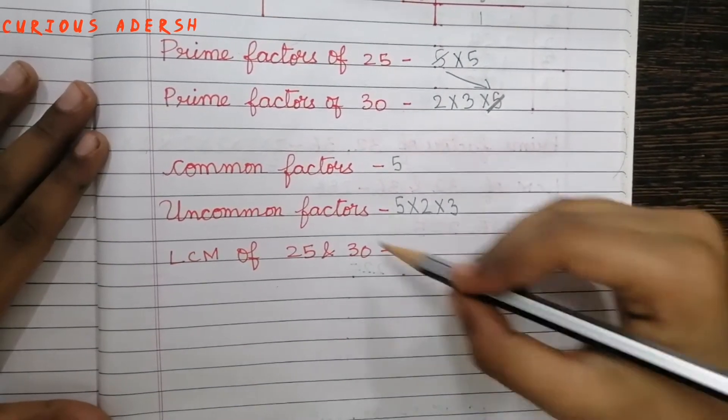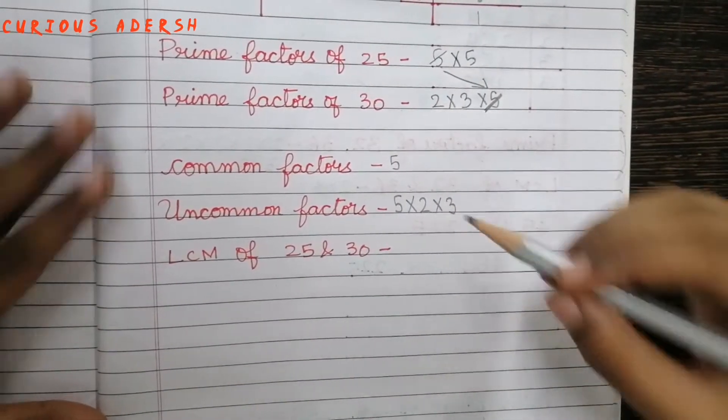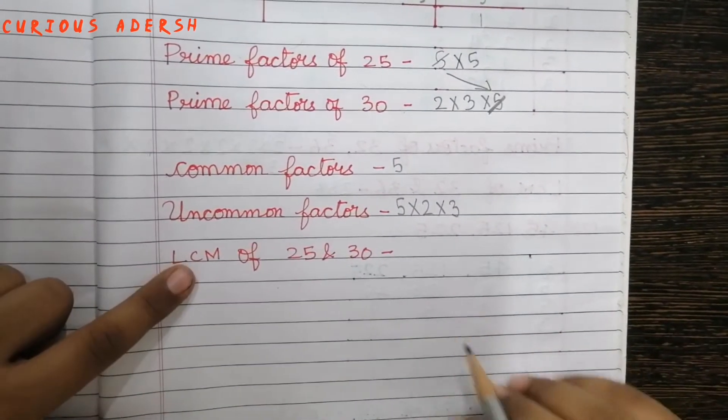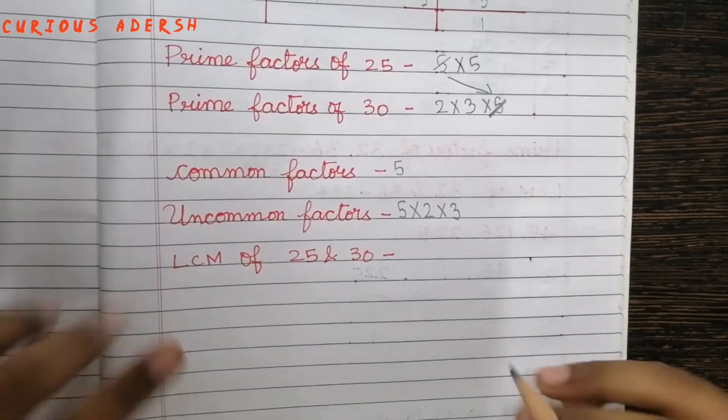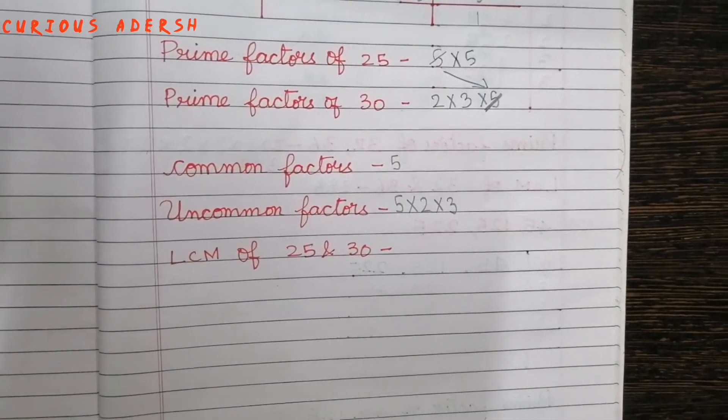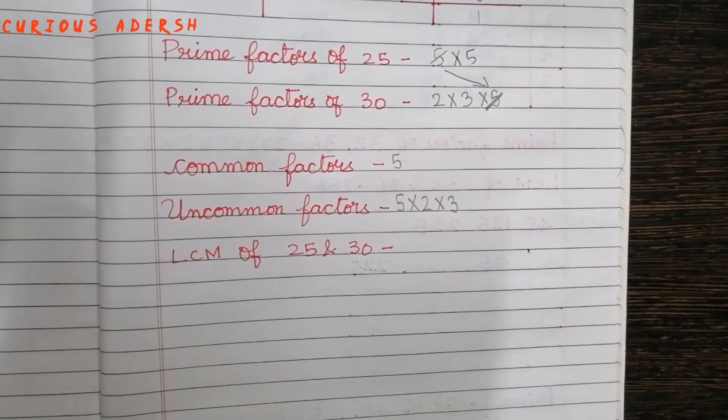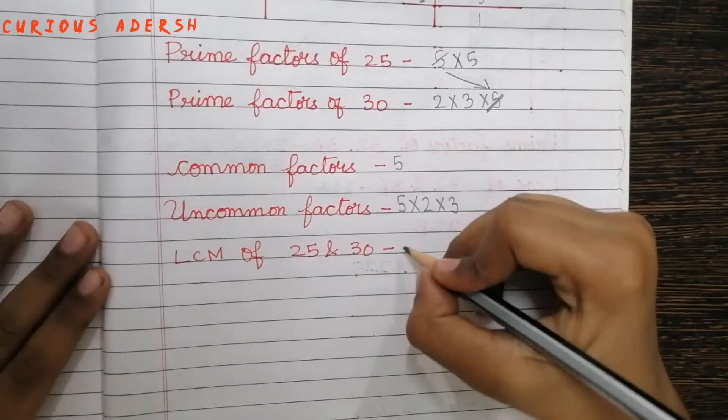Now we'll multiply all these numbers to get our LCM. So the LCM of 25 and 30 is 150.